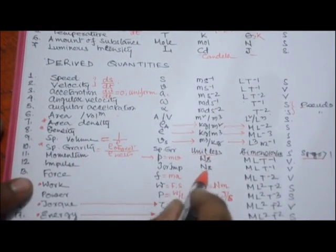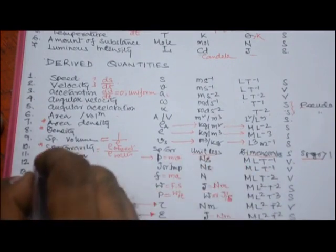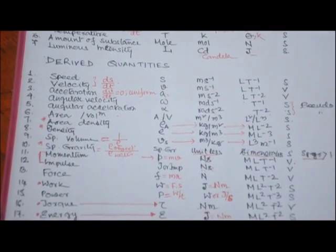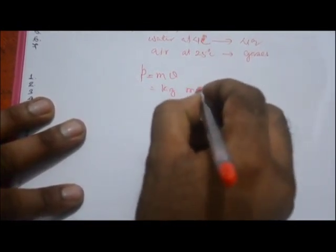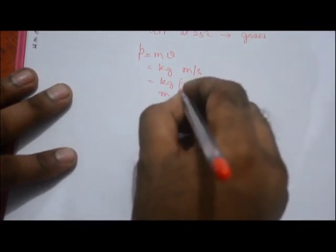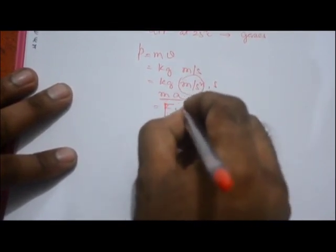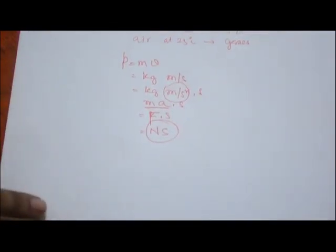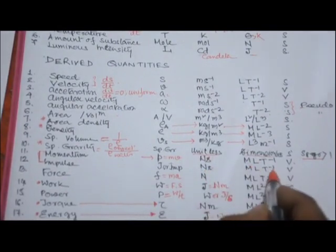Momentum p equals m times v, with unit newton-second and dimension ML T⁻¹. Importantly, momentum and impulse have the same dimension and the same unit — newton-second. We can verify: p = mv = kg × (m/s) = kg·m/s = (mass × acceleration) × time = force × time = newton-second. Both momentum and impulse are vector quantities.